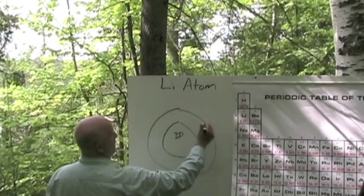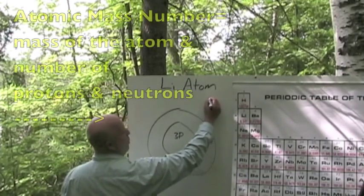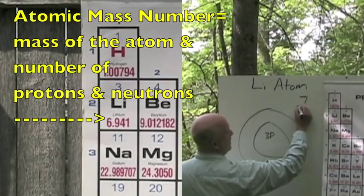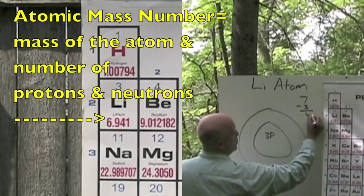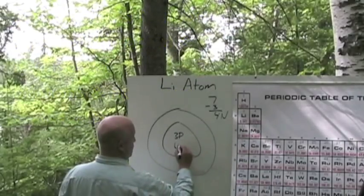And then we go ahead, we know that lithium is 6.941. So we're going to take that, round that to 7 minus 3, equals 4 neutrons.